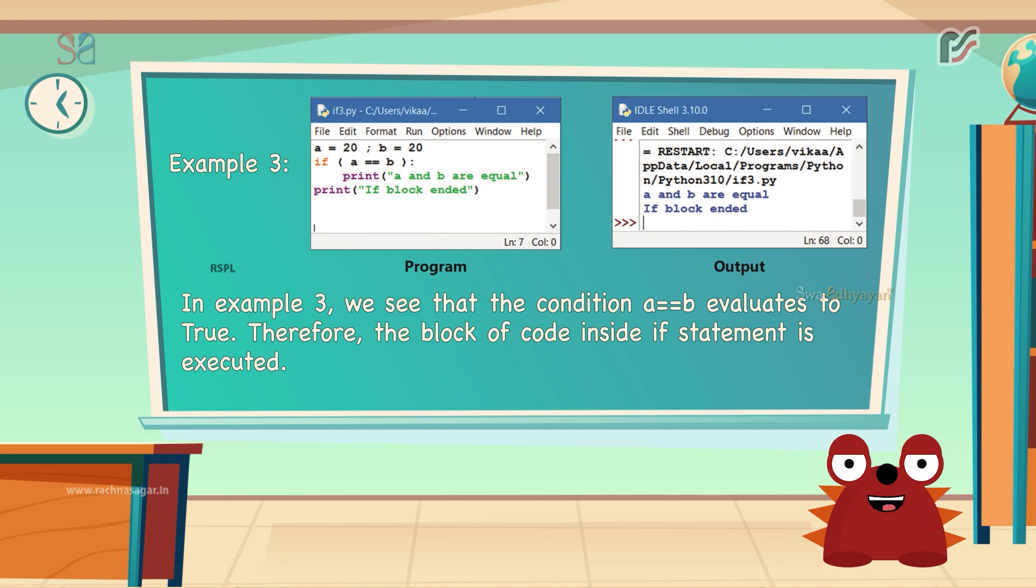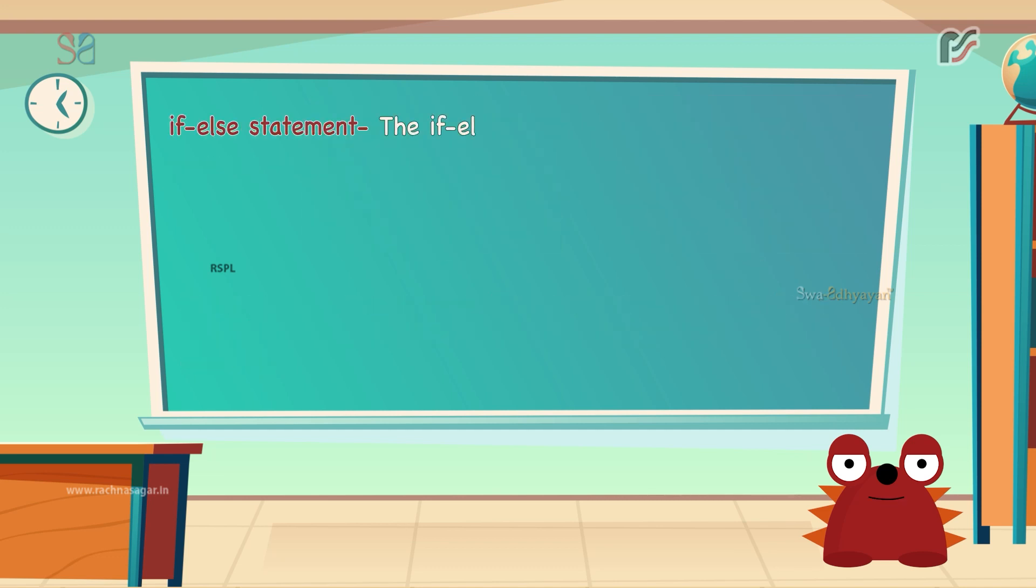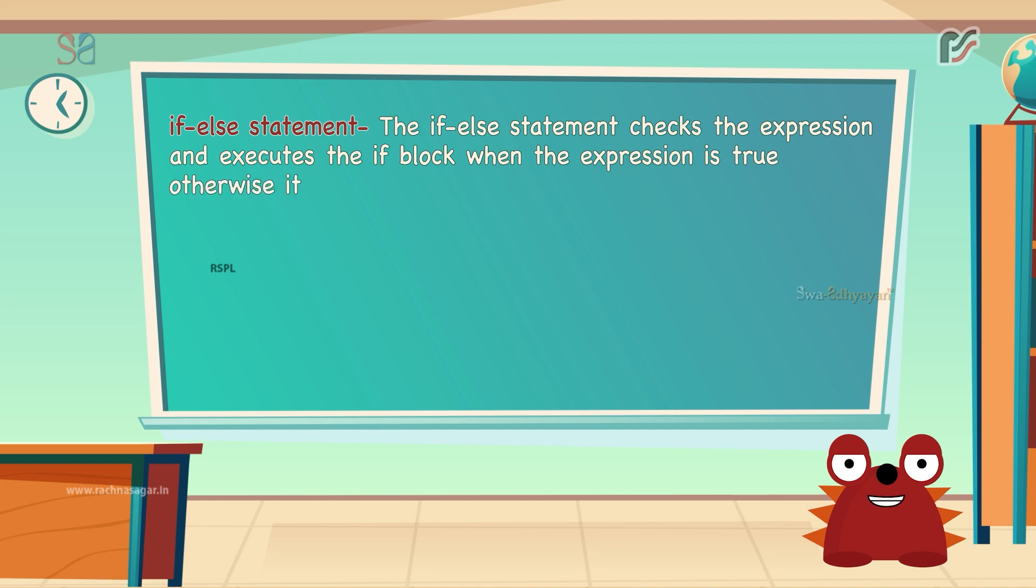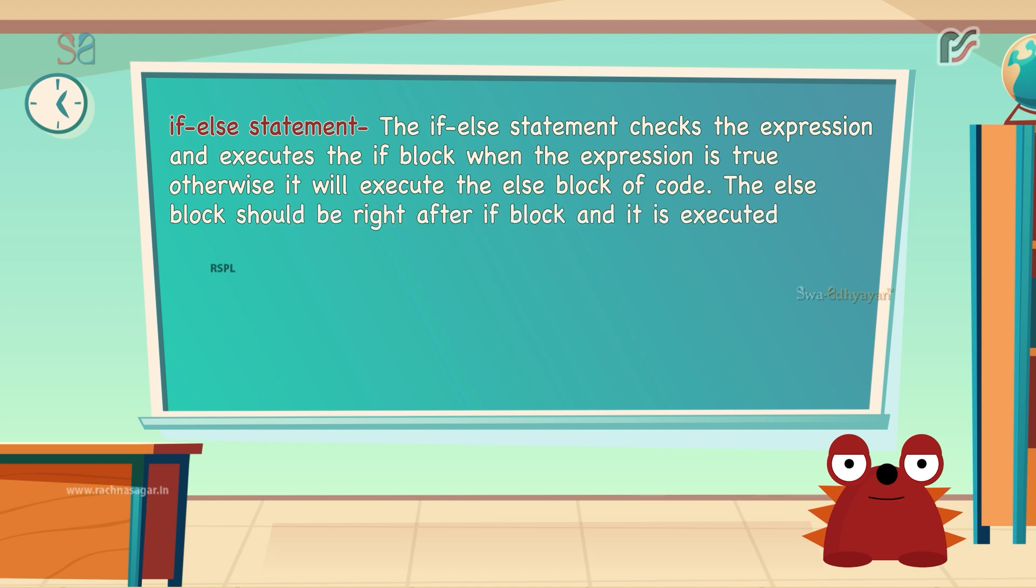Let us move further with the if else statement now. The if else statement checks the expression and executes the if block when the expression is true. Otherwise, it will execute the else block of code. The else block should be right after the if block and it is executed when the expression is false. This is the syntax: if condition statement else statement.